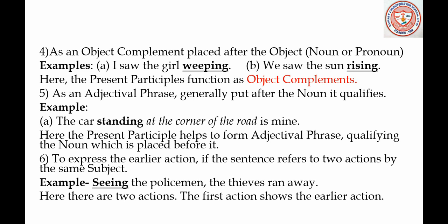To express the earlier action if the sentence refers to two actions by the same subject. Example: 'Seeing the policeman, the thieves ran away.' Here we have two actions and the first action shows the earlier action. The word 'seeing' is the present participle in this sentence.